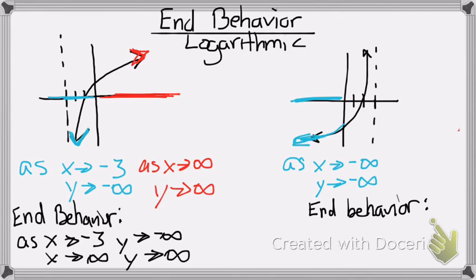Alright, now looking at the right side of my graph. I want to say that it's going all the way to positive infinity, but it stops right here because of that asymptote. So, my x is approaching positive 3.